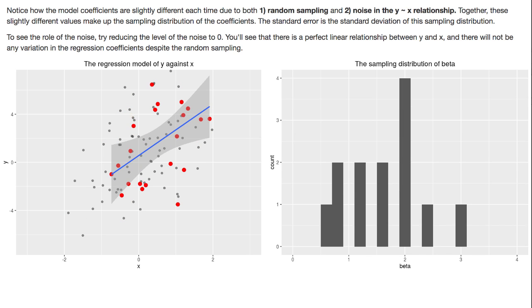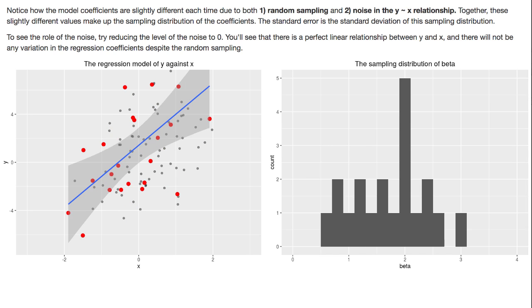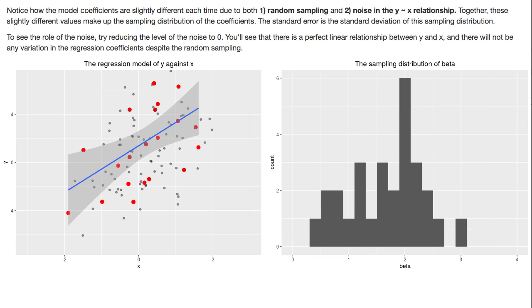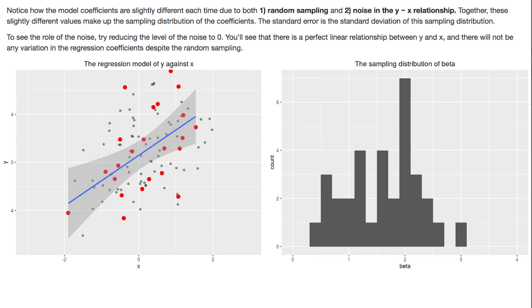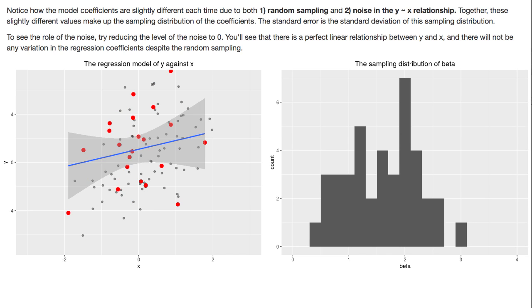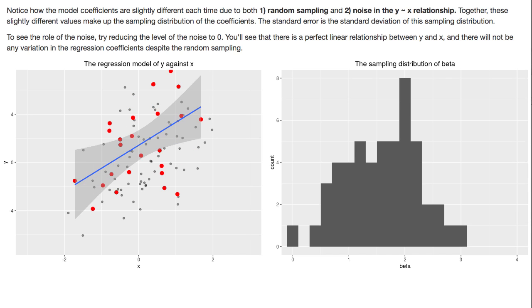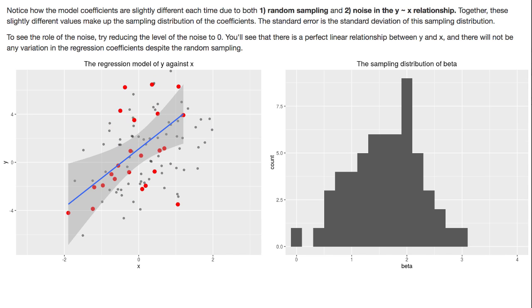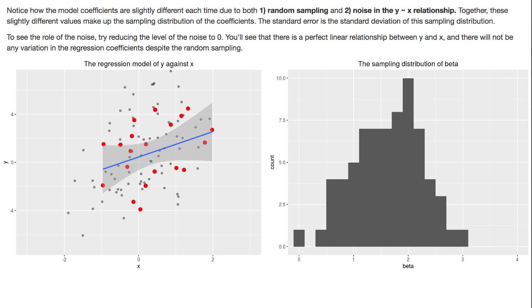So let's speed this up a bit and start taking lots of samples. The thing to note here is on the left each sample we take is slightly different from the last, we're getting different lines, we're getting different slopes of those lines which means we're getting different estimates of beta 1, and each time we take a sample our histogram on the right hand side is getting more populated because we have more samples and therefore more estimates of beta.